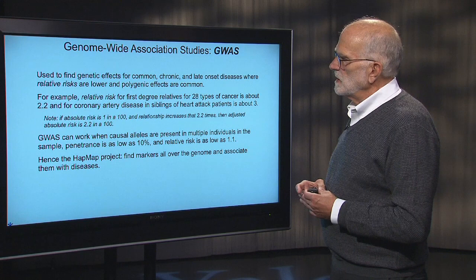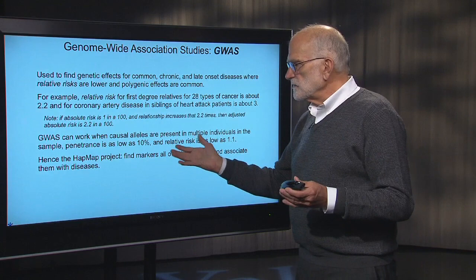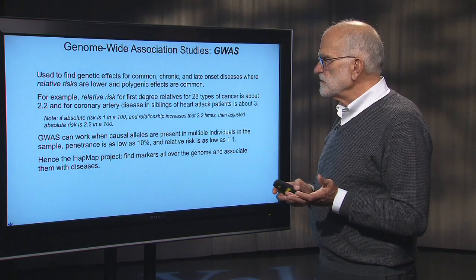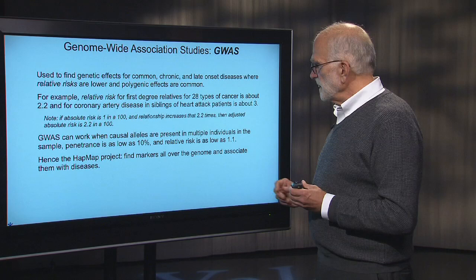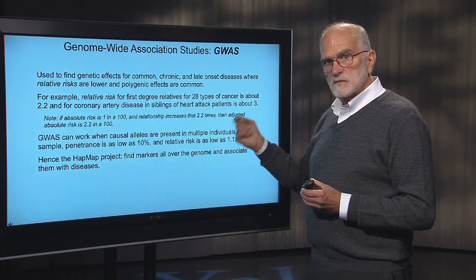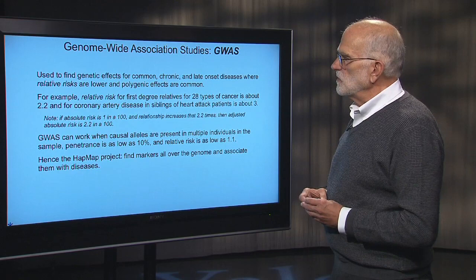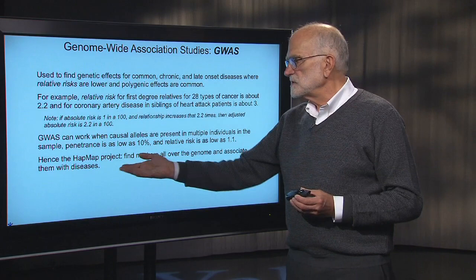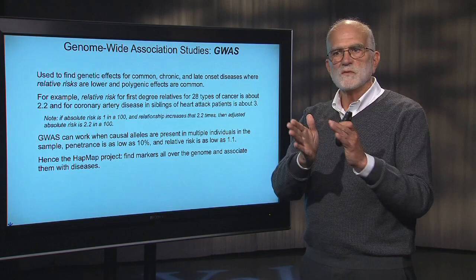Genome-wide association studies are now called GWAS. They work if the important alleles — the genetic variants — are present in multiple individuals, so you need a sample where you encounter them several times. The penetrance can be as low as 10%, and a relative risk can be as low as 1.1, meaning the effect of that gene on increasing disease risk can be as little as 10%. This generated a project after sequencing of the human genome called the HapMap — for haplotype map — where a haplotype is a chromosome with a particular set of markers distinguishing it from another.